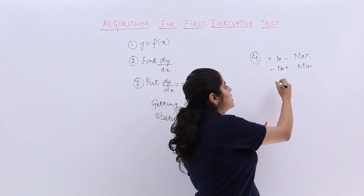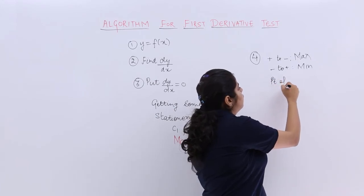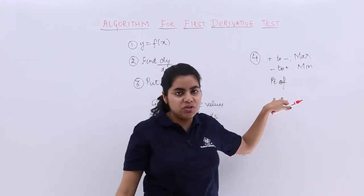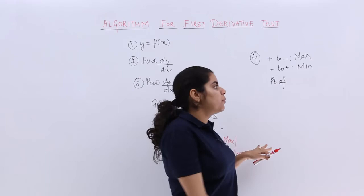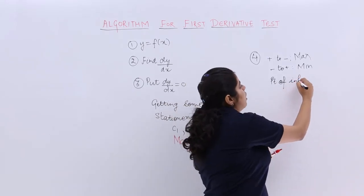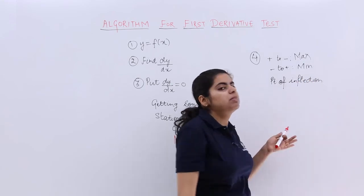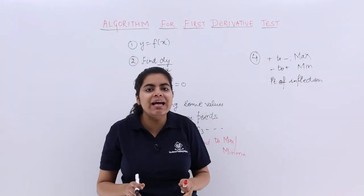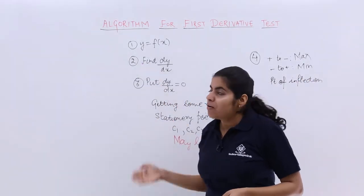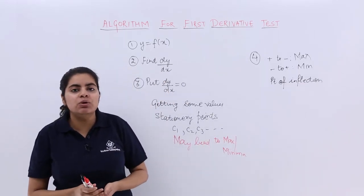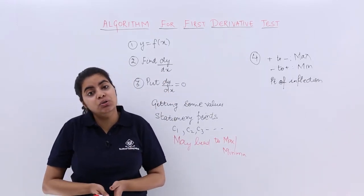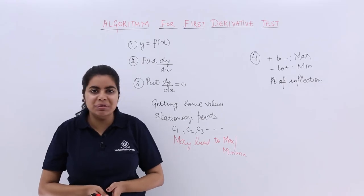Then we say that it is the point of inflection, which does not give me maxima, which does not give me minima. Don't get confused. The main idea is of the first derivative test: finding dy by dx, putting it equal to zero, getting some values, checking whether those values give you maxima or minima.